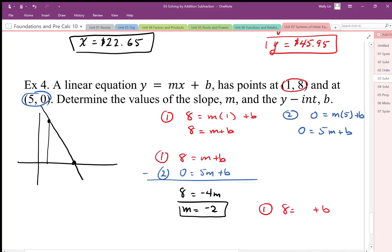We worked out m to be negative 2. That allows us to solve for b. b is equal to positive 10.